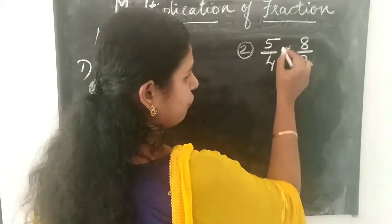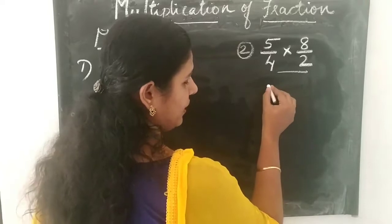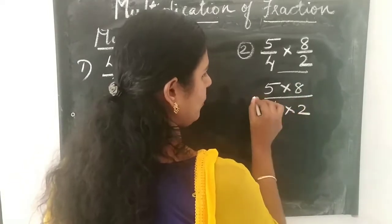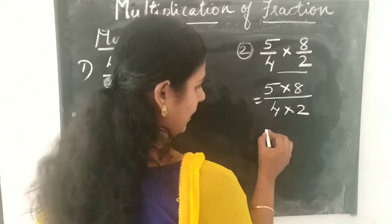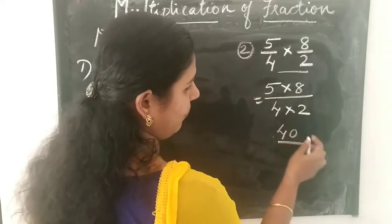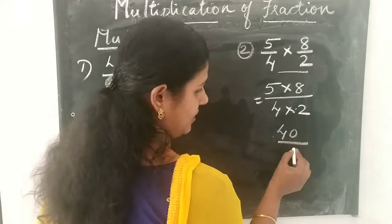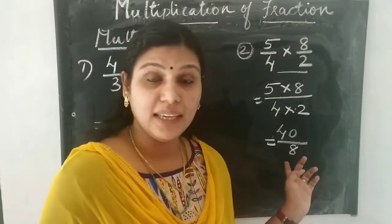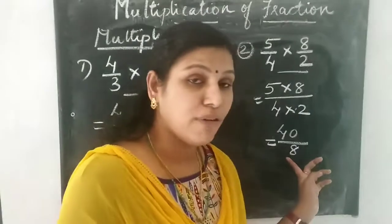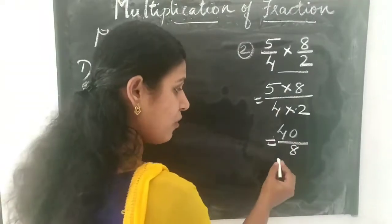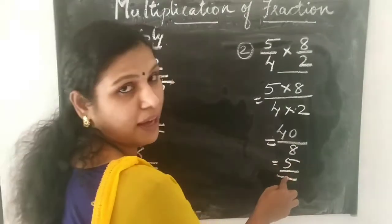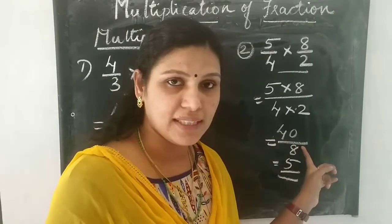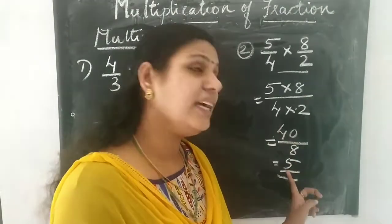The next question is 5 by 4 into 8 by 2. We write this as 5 into 8 divided by 4 into 2. Now 5 into 8 is 40, and 4 into 2 is 8. So we get the answer as 40 by 8. And from the 8 times table, 8 fives are 40, so we get the final answer as 5.